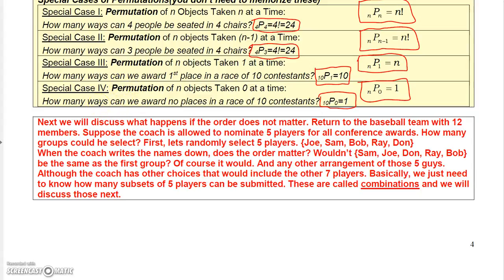That's basically permutations in a nutshell, and now the next thing we're going to talk about is what happens if the order does not matter. Go back to the baseball team with 12 members. Suppose the coach is allowed to nominate five players for all conference. How many groups could he select? Notice I said groups. First, let's randomly select five players: Joe, Sam, Bob, Ray, and Don. When the coach writes the names down, does the order matter? Wouldn't it be the same five nominated if we wrote Sam, Joe, Don, Ray, Bob? The same group, right? By rearranging the order in this example, we get nothing new. That would mean that we're not interested in the number of ways we can arrange the people. We're only interested in the number of five-player subsets that are possible. And when that's the case, we're simply looking for the number of combinations, and we're going to talk about combinations in the next video.